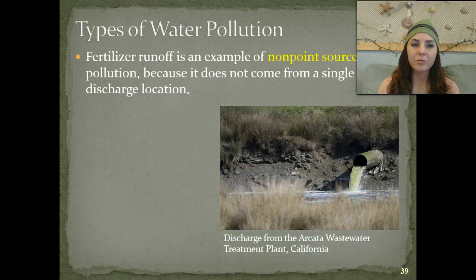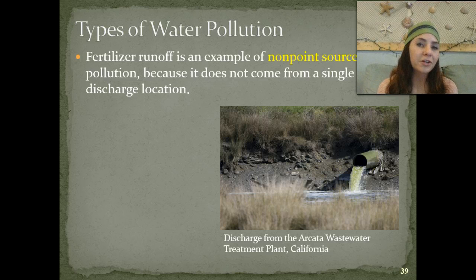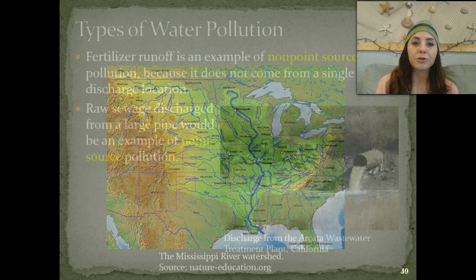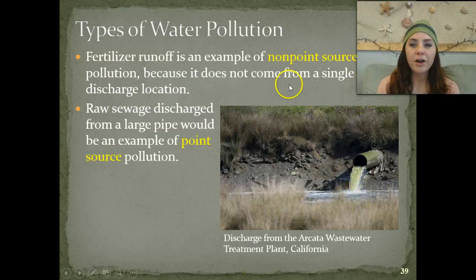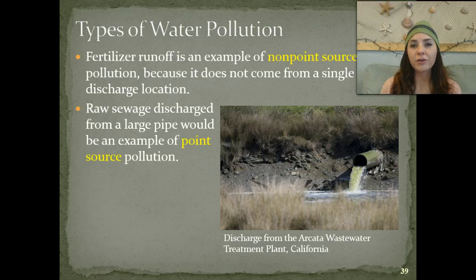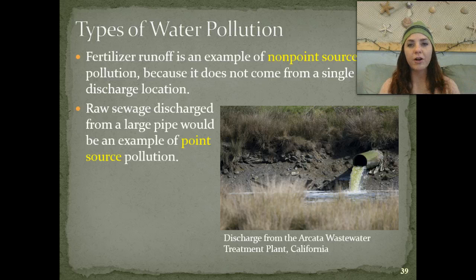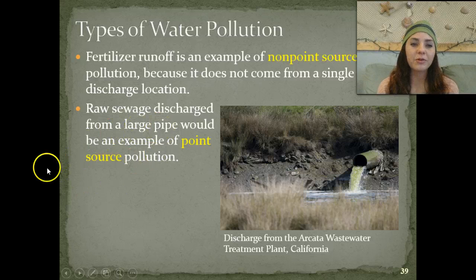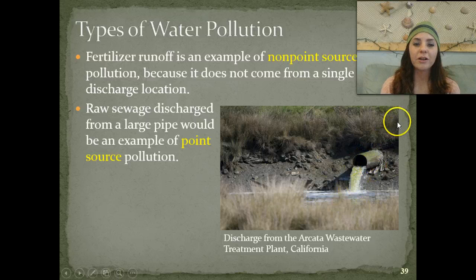There are different types of water pollution. We have fertilizer runoff, which is an example of non-point source pollution. Make sure you know the difference between non-point source pollution and point source pollution. Non-point source pollution doesn't come from a single point—whenever we have fertilizer runoff, it's coming from a bunch of different points in that area and then running off into a source. We also have raw sewage, which is an example of point source pollution—coming from a single point, like a pipe, going into a water source.